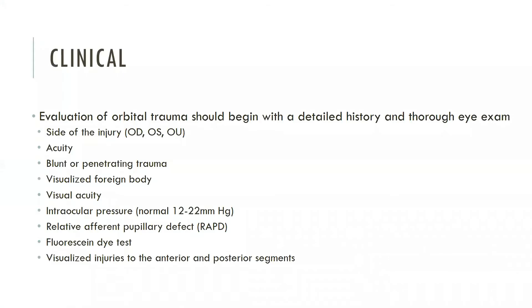The evaluation of all orbital trauma should begin with collecting a detailed history of the injury and performing a thorough eye exam. These are the most important components of an orbital injury evaluation. Imaging should be used as an adjunct, not a substitute for these two aspects of the patient exam.